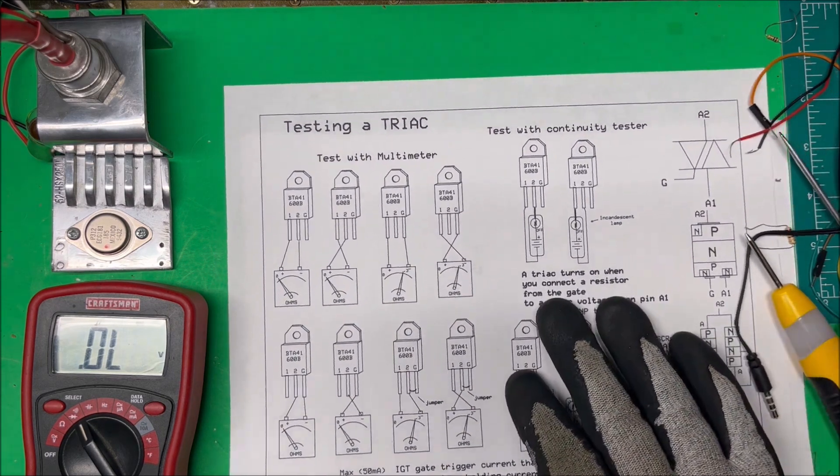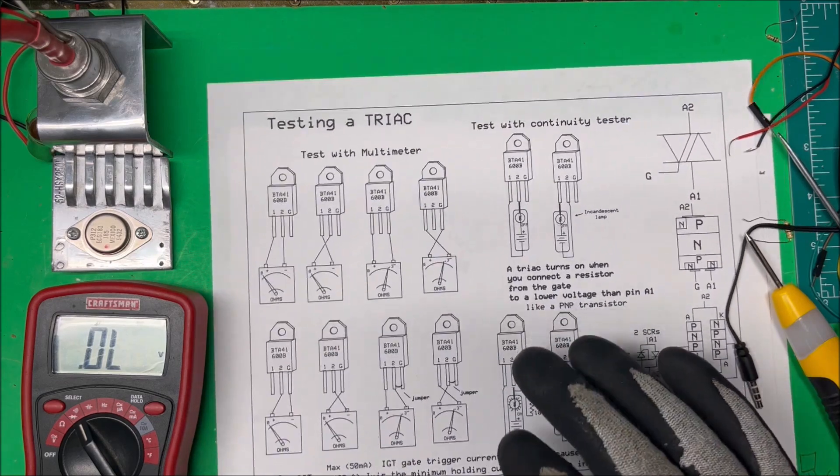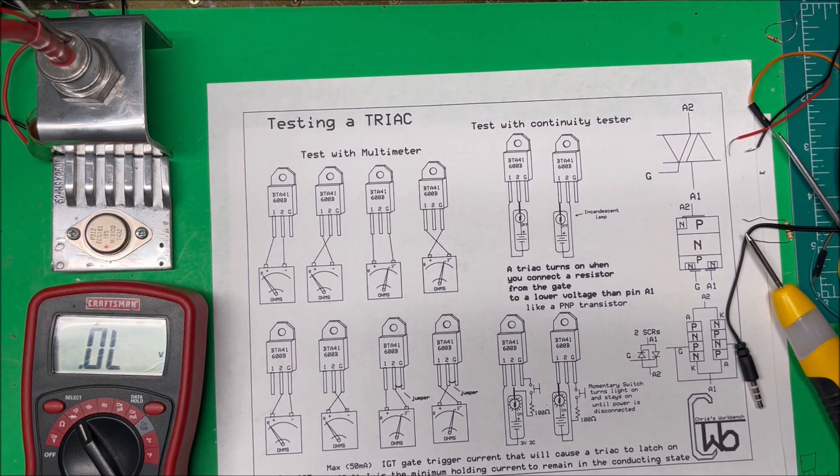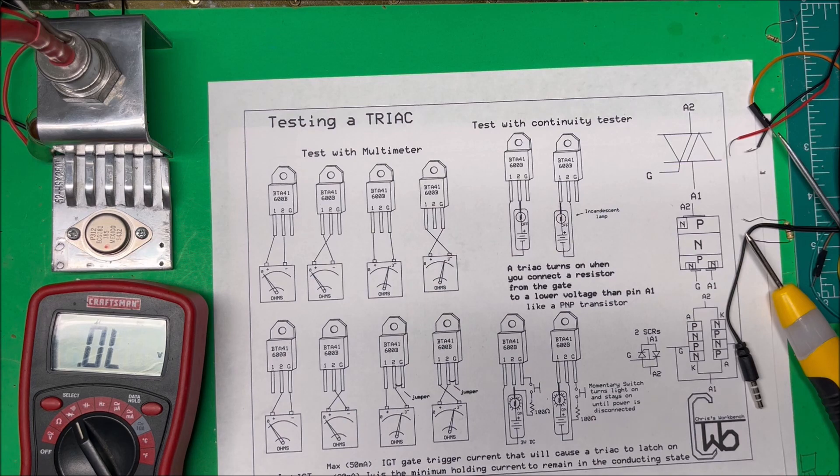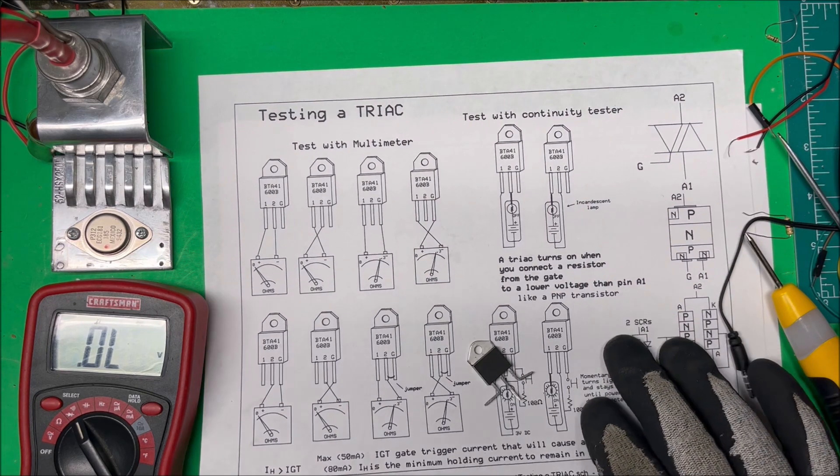So this is probably going to work. We know that all the PN junctions are good and they're reading the right values there.